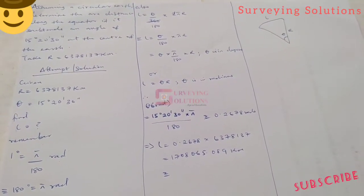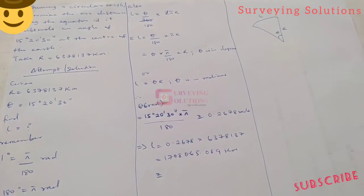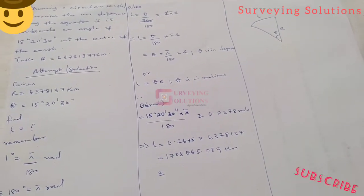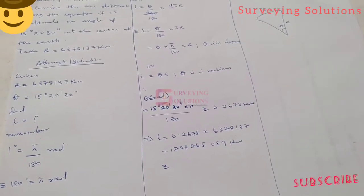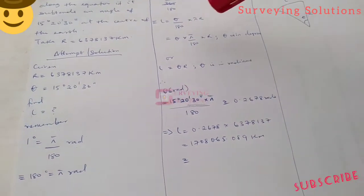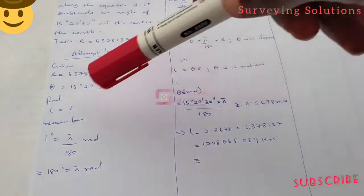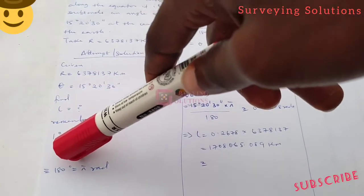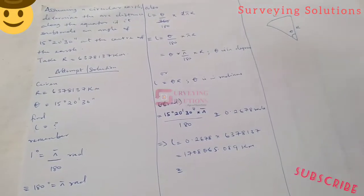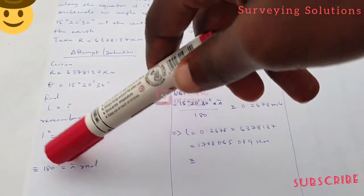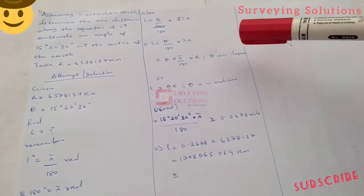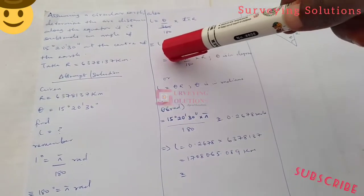When we substitute, remember that θ over 180 is in radians. When we substitute into this expression, instead of having θ over 180 we will just have π because it is now in radians.